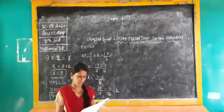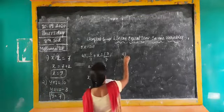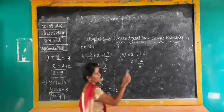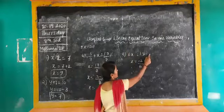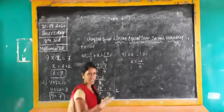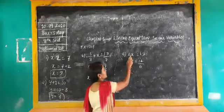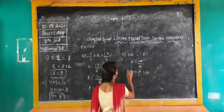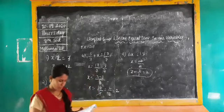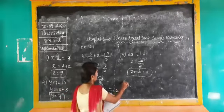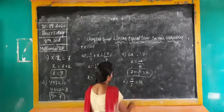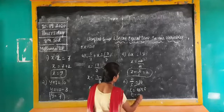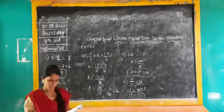Fifth question: 6x equals 1 — since multiplication is involved, you have to divide. x equals 1/6. Sixth question: t divided by 5 is equal to 10. Just multiply both sides by 5 — t equals 10 into 5, which gives 50. Sixth question answer is 50.